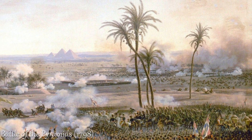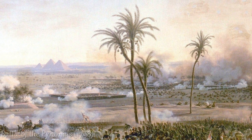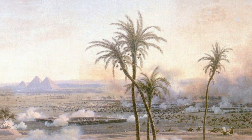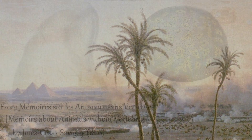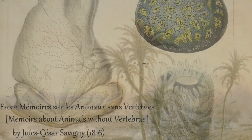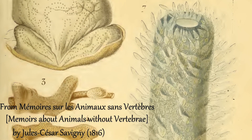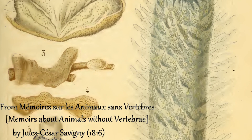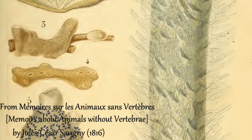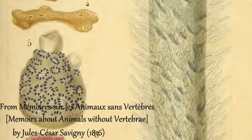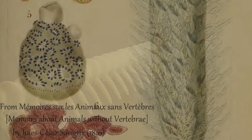Napoleon also brought along more than 150 other scientists. Savigny oversaw the collection of invertebrates, which he brought back to Paris to study at the National Museum.